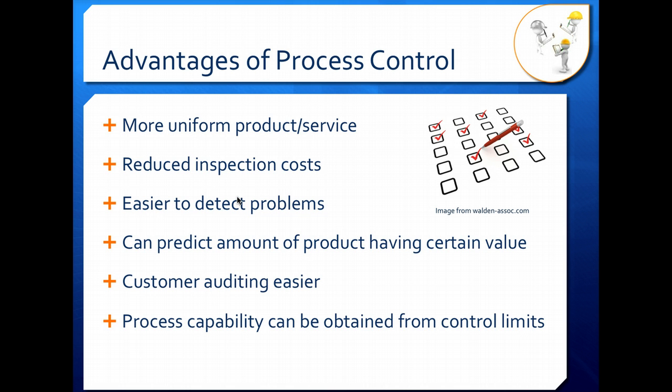Your process capability also can be obtained from the control limits when your process is in control, when your average is constant over time, when your warning and action limits are constant over time.